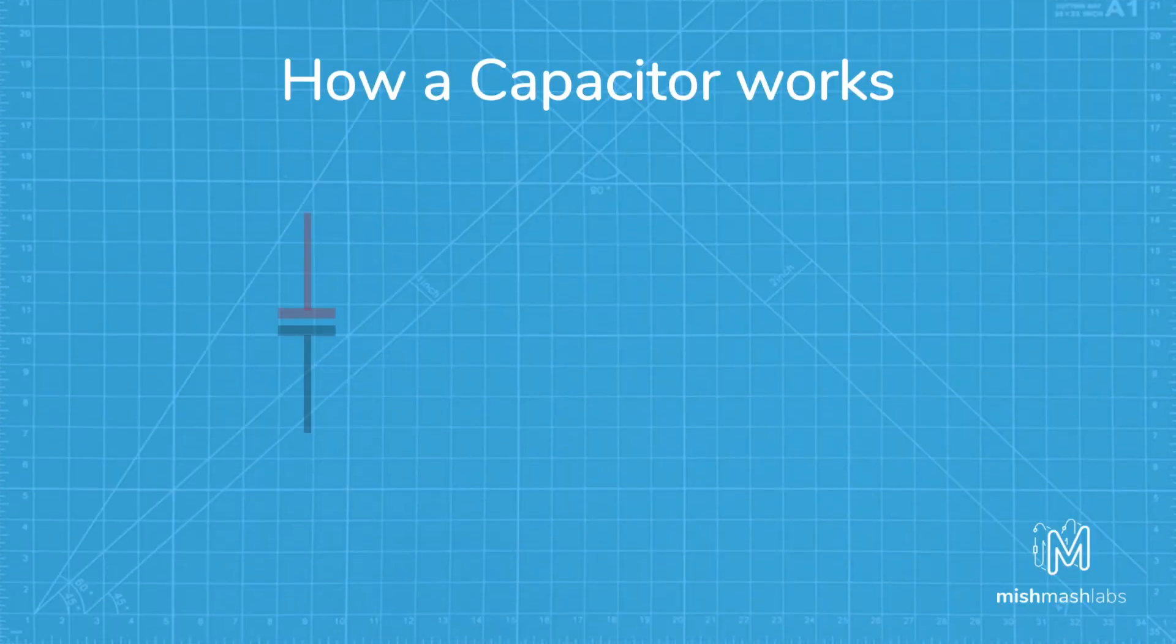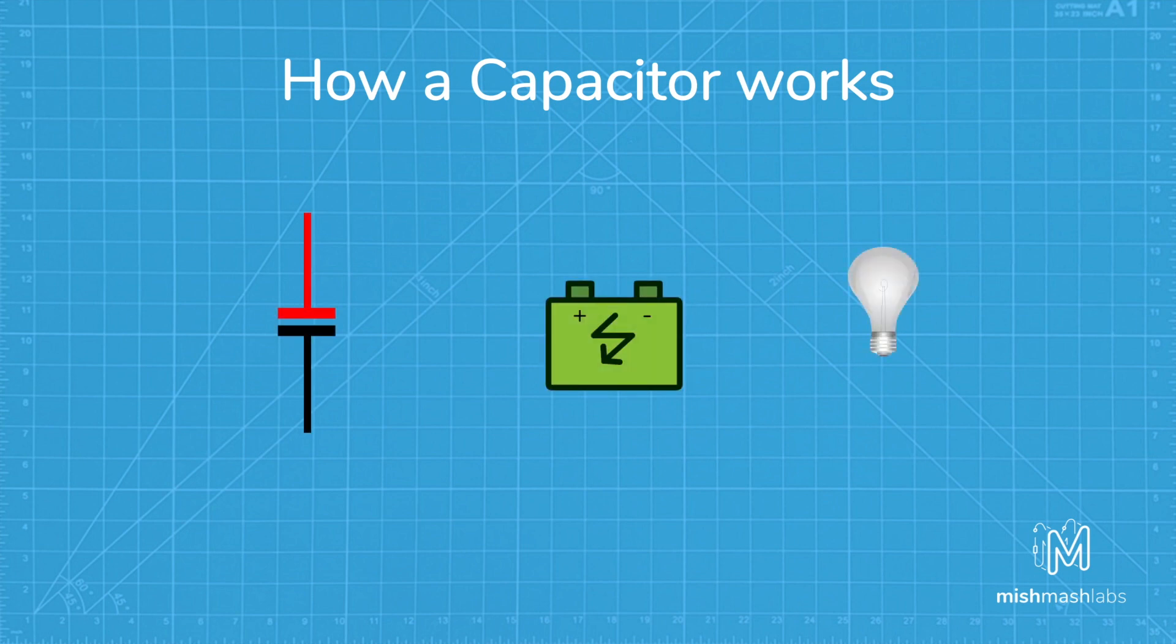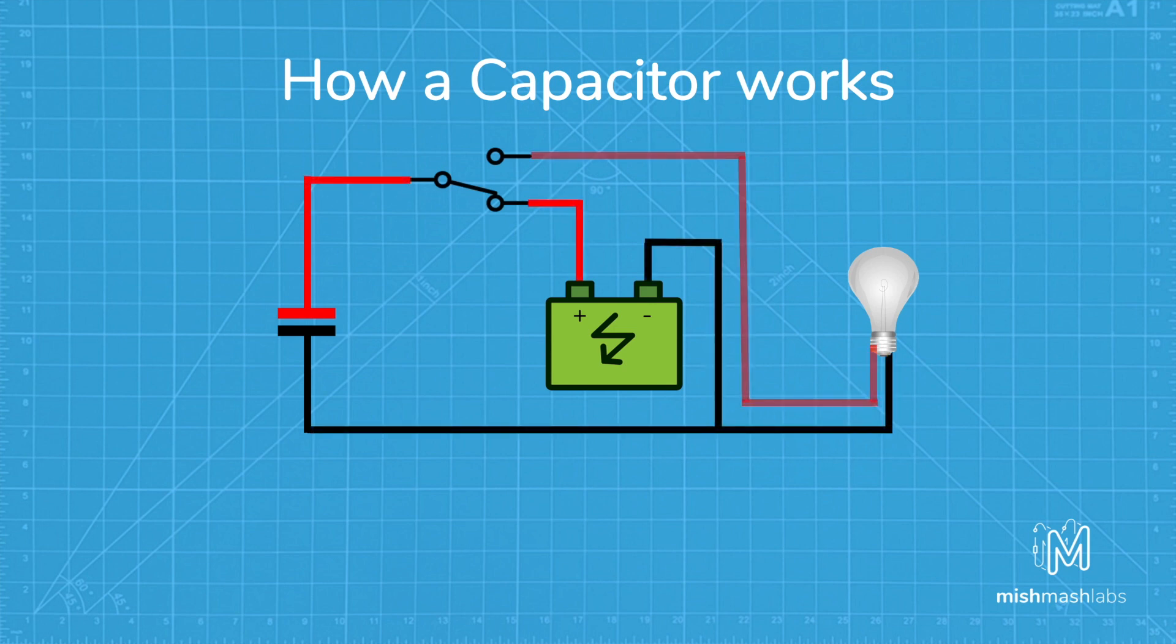For the following example of how a capacitor works, first we have a capacitor, a light, a battery voltage source, and a switch. So in this first instance, the capacitor is charging connected to the battery directly. And then the switch switches to the lamp, and you can see the lamp has been powered by the capacitor. Once the capacitor has completely discharged, the lamp turns off.